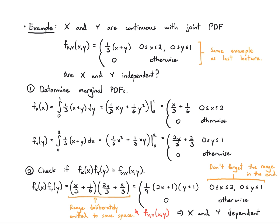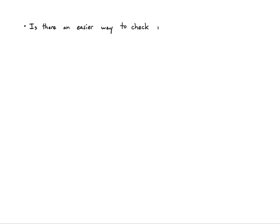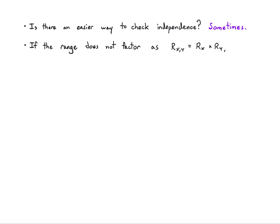So knowing X can help you predict the value of Y, and knowing Y can help you predict the value of X. Maybe I want an even easier way to check independence. This factorization is nice, but sometimes I can do even less work — carefully. The key point: if the range does not factor as R_{XY} = R_X × R_Y, then the joint PMF or PDF will not factor either. The range is part of the function, so if the range doesn't factor, the function won't factor.